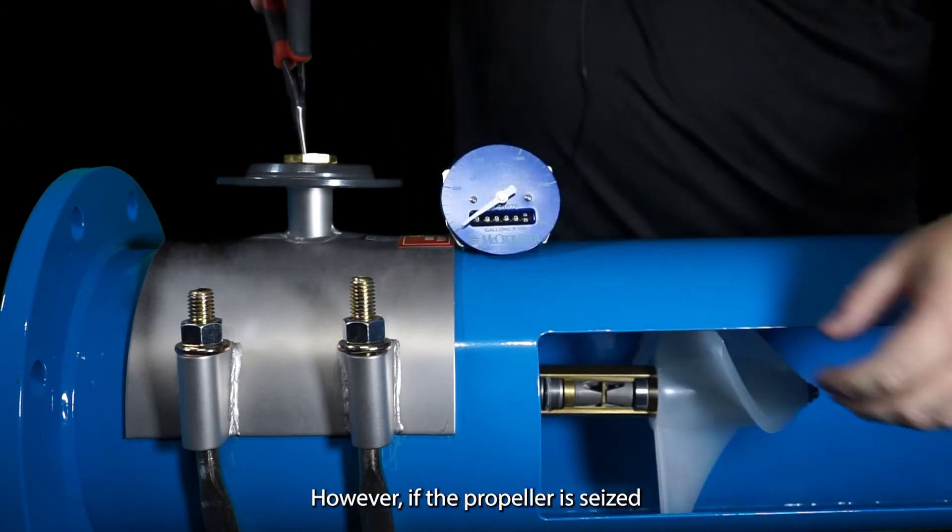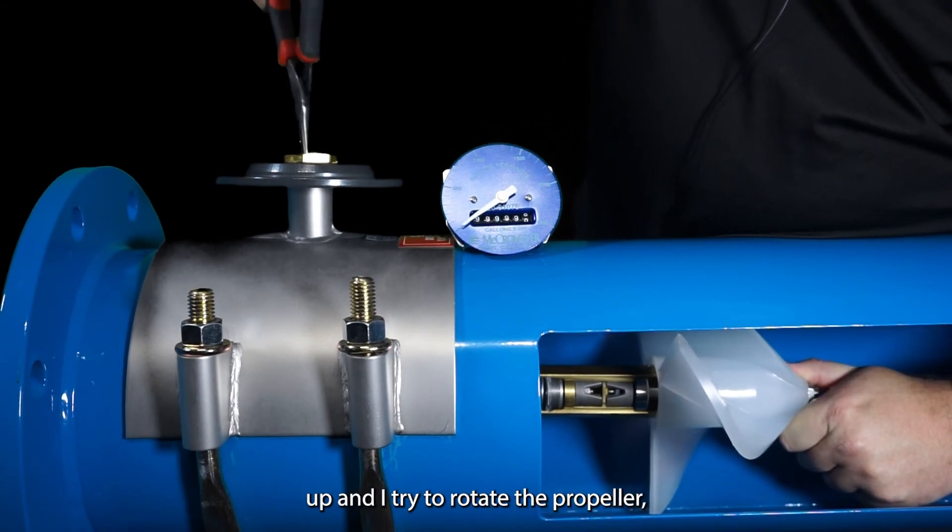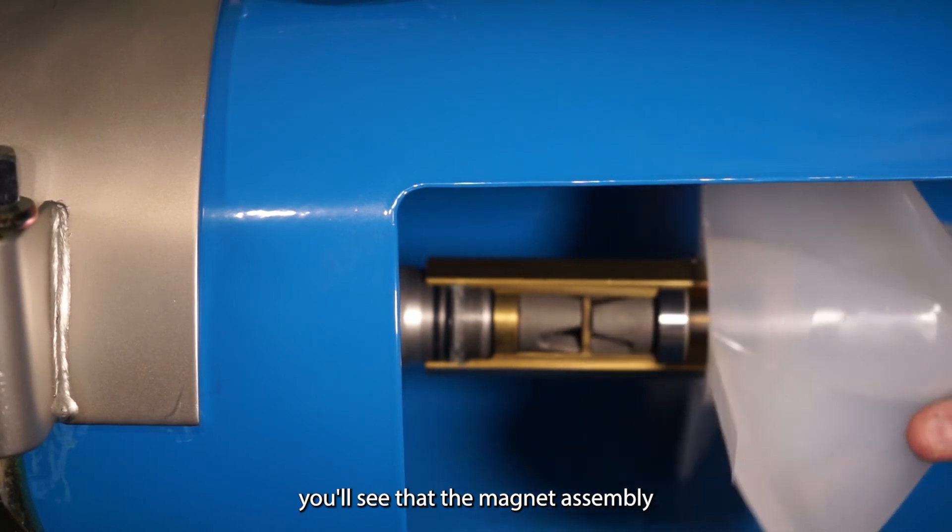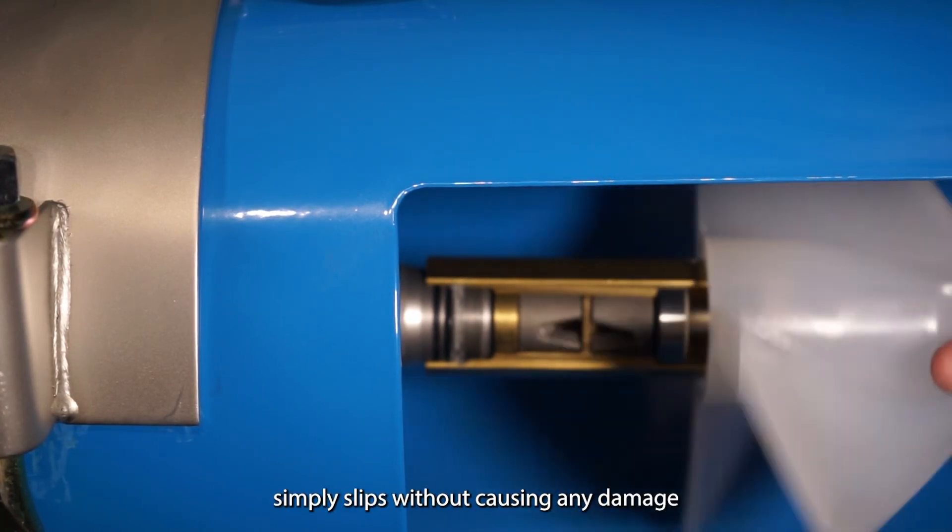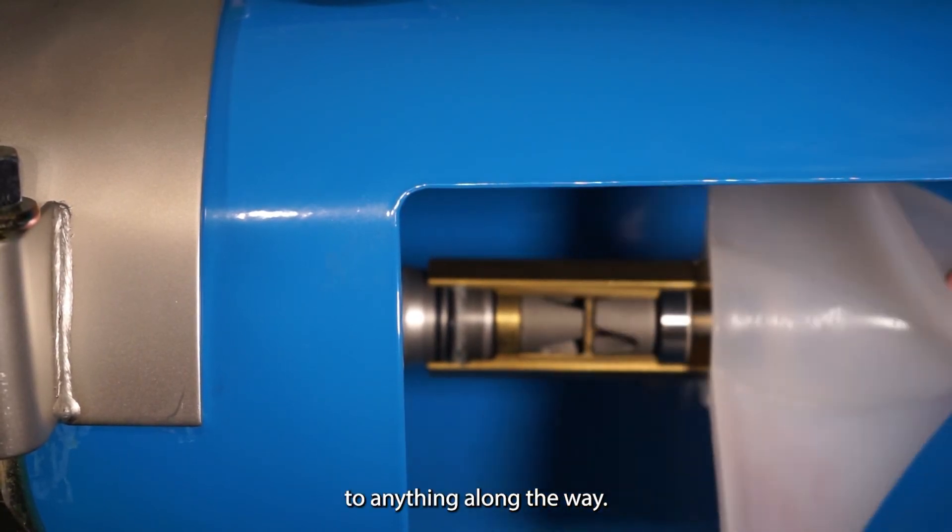However if the propeller is seized up and I try to rotate the propeller you'll see that the magnet assembly simply slips without causing any damage to anything along the way.